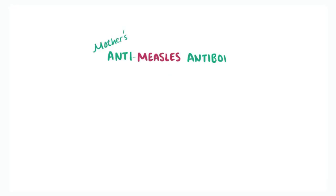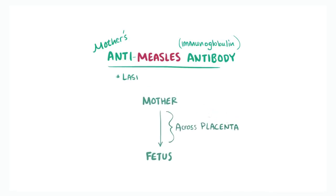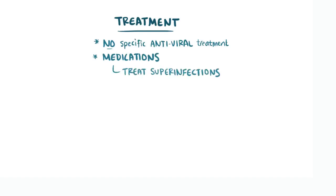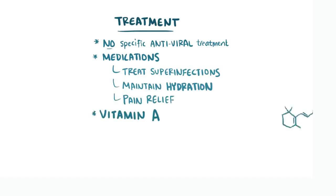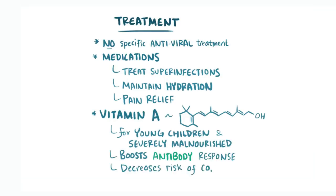In addition to the vaccine, another source of protection for young infants is their mother's anti-measles antibody, or immunoglobulin, which the fetus receives transplacentally and lasts until about 9 months of age. When measles does develop, there isn't a specific antiviral treatment. Instead, medications are generally aimed at treating superinfections, maintaining good hydration with adequate fluids, and pain relief. Some groups are also given vitamin A, like young children and the severely malnourished, which acts as an immunomodulator that boosts antibody responses to measles and decreases the risk of serious complications.